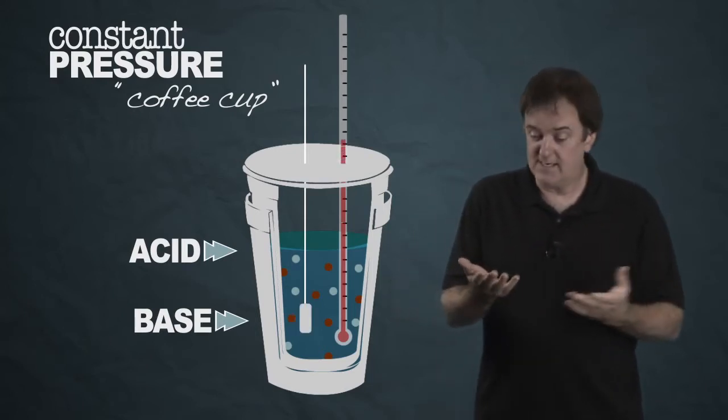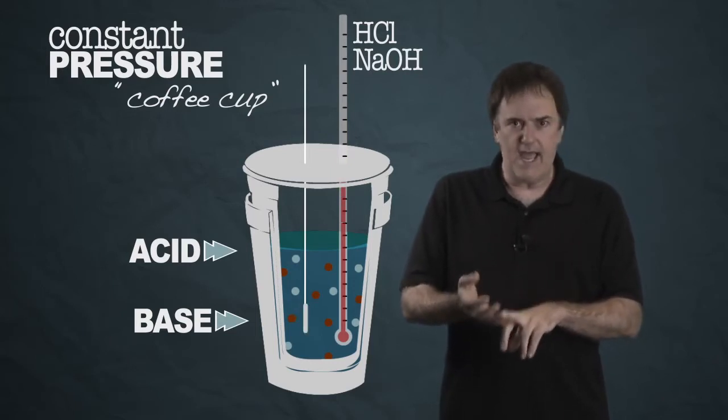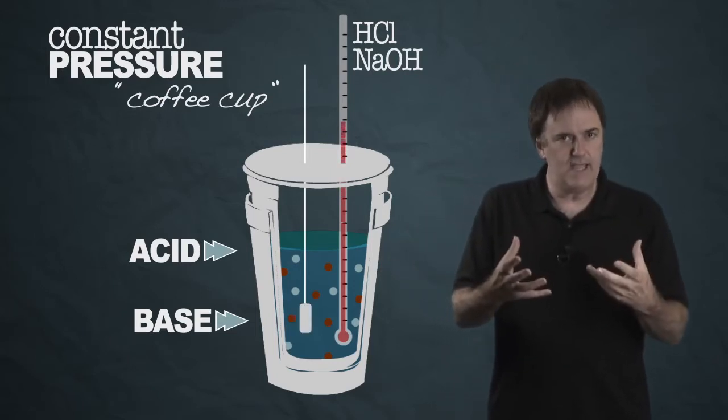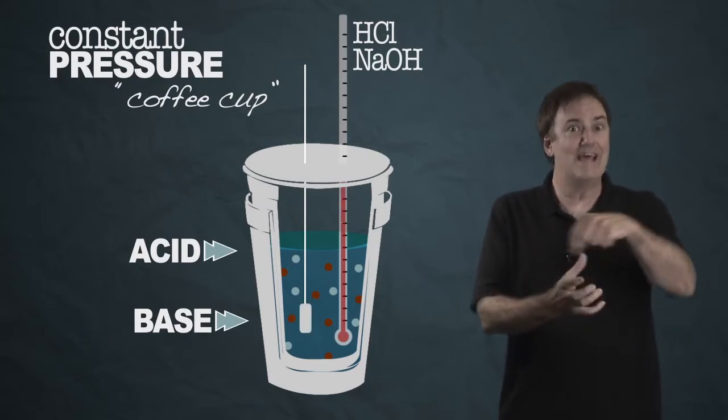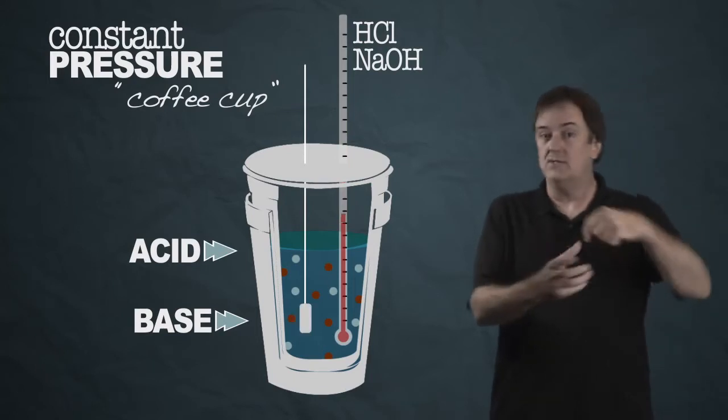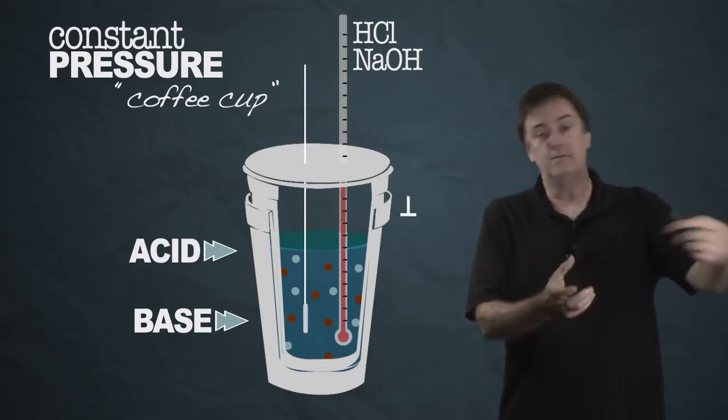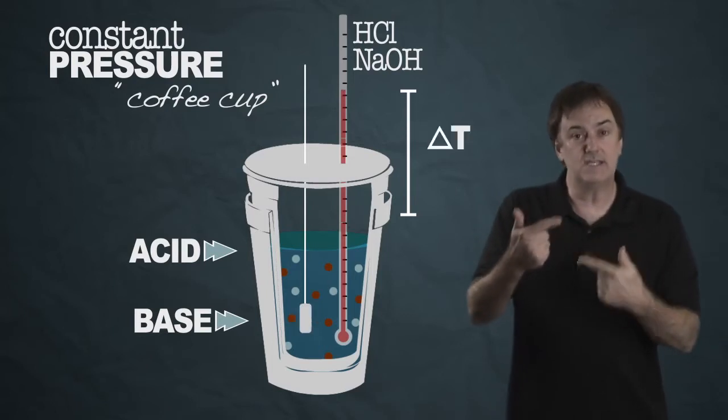especially if you do something like hydrochloric acid plus sodium hydroxide. It's an exothermic reaction, so therefore it gives off heat, and sure enough, the temperature will rise in that solution, and it's real easy to measure the start and the finish. Look at the thermometer before, pour it in, stir, look at it when it stops. You've got yourself a delta T.